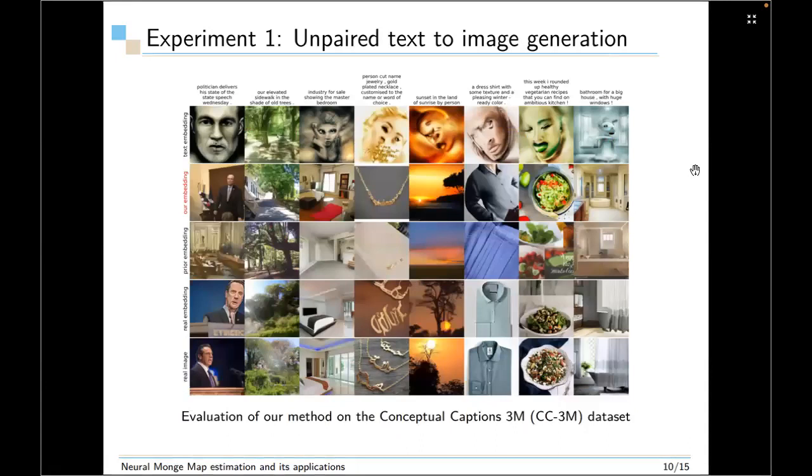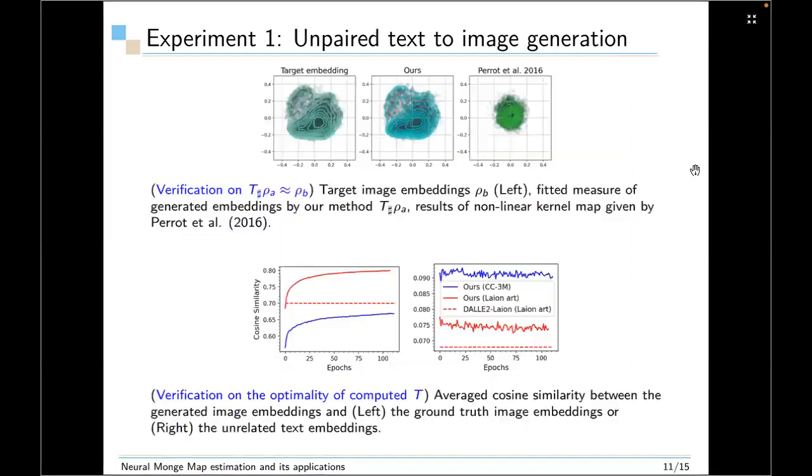Next, we also train our model on another more noisy dataset, which is called Conceptual Captions 3M dataset. And our results are still very realistic. So next, we want to investigate whether our map can satisfy the constraints of Monge Map. So the first constraint is t push forward ρ_A is roughly equals to ρ_B. And for this, we plot the target image embeddings and the generated embeddings by our method. And also compare with a baseline method given by Parrott et al. 2016. This is a discrete OT method. So you can tell that our generated embedding can recover nearly the same as the target embeddings distribution, but the discrete OT method cannot do so.